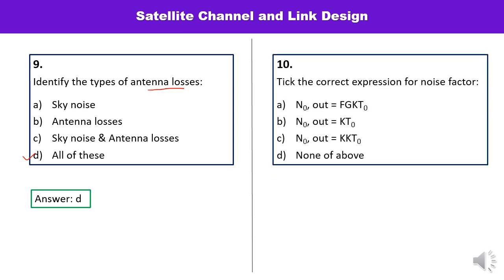Next question: what is the correct expression for noise factor? Noise factor is F·G·K·T, where T is the temperature. You can remember the expression and write it directly — A is the correct option.